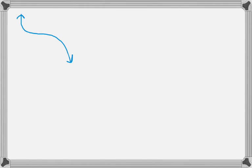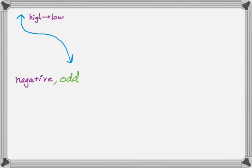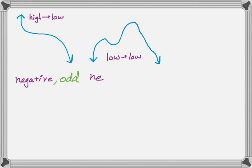Let's say we have this polynomial. Just looking at it, we can figure out what kind it is. It starts up high and ends down low, so I know it has to be odd — specifically a negative odd polynomial. And here's another one: it starts low and ends low, which means it's a negative even polynomial.